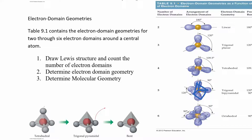If you have six electron domains it's called octahedral — basically a square bipyramid with a square in the middle and one on top and one on the bottom, all 90 degrees. You might wonder why it's 'octa' and not 'hexa' — you're not counting the six electron domains but rather the faces: if you drew in the faces it would form an octahedron with eight total faces. So octahedral has 90-degree angles.